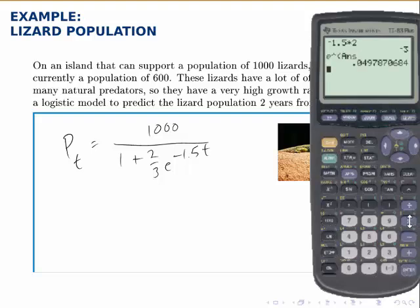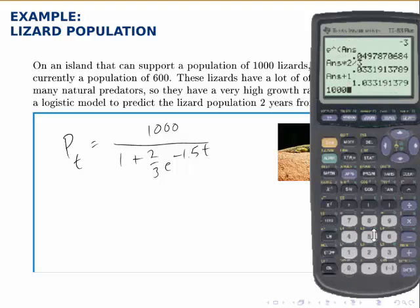multiply that then by 2 thirds, and add that answer to 1, and that is the full denominator. Then if we divide 1,000 by that answer, we find that the population is predicted to be about 968 at the end of two years.